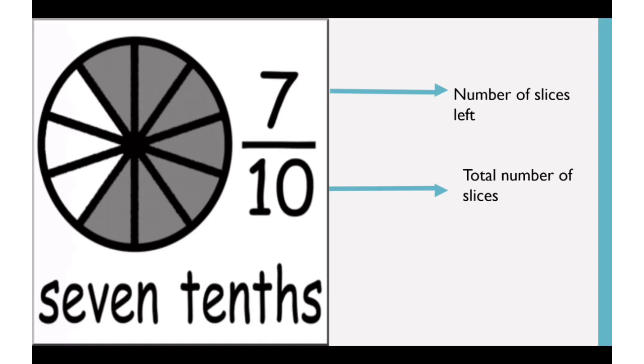Now, if you guessed 7 tenths, good job students, good job. 7 tenths, the 7 represents the number of slices that were left, and the tens represent the total number of slices. Very good students.